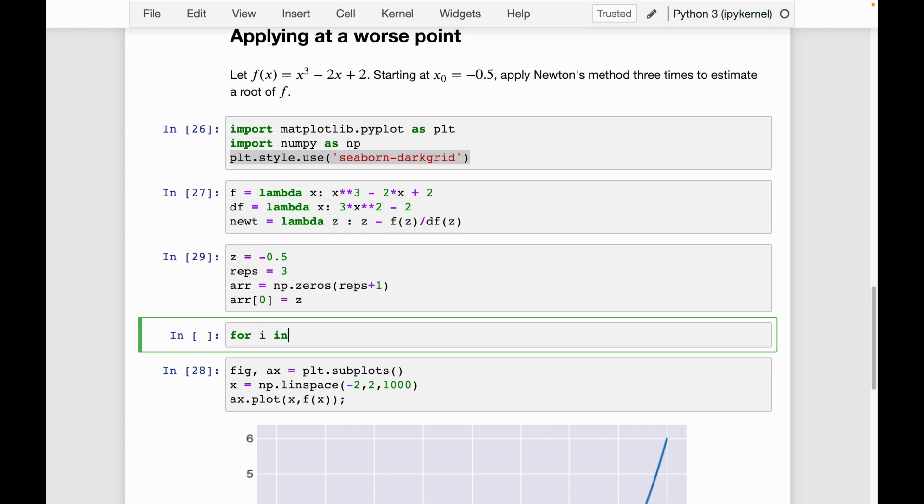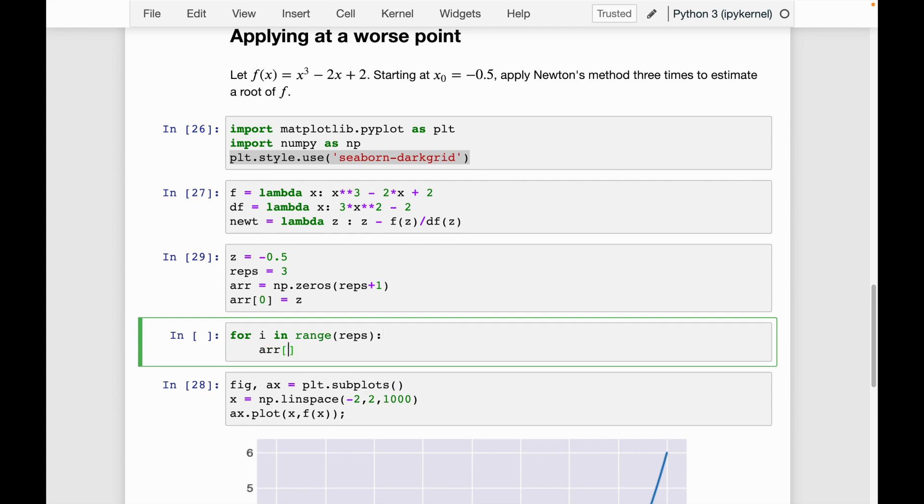So I'll say for i in range reps, arr of i plus one is going to be Newton of arr of i. Again, this was all covered in the previous video. So definitely go back and watch it or rewatch it if you're still confused about this or reach out about questions.